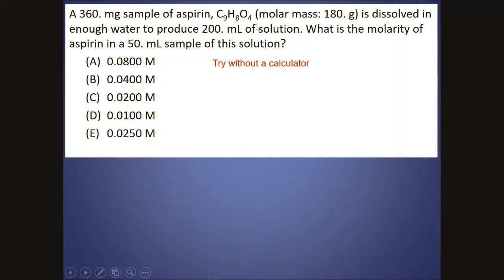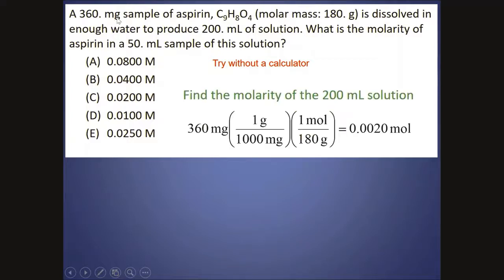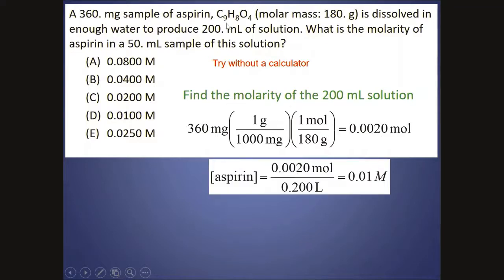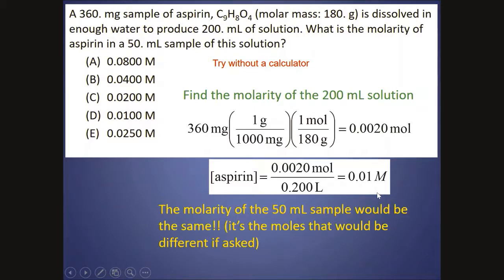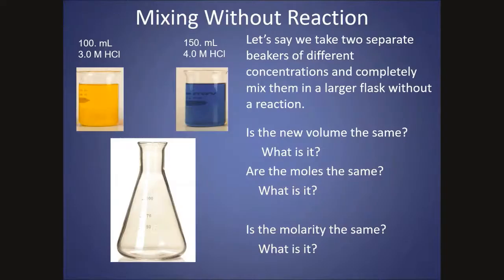So in this problem, 360 milligrams of aspirin is dissolved in enough water to produce 200 milliliters of solution. Then they want to know what's the molarity of aspirin in a 50 milliliter sample of this solution. Well, I have the grams of aspirin. I can mole it out, essentially, to get the moles of my solute, and then I can divide it by the volume that it's dissolved in, which is the 200 milliliters, and get the molarity. And if I were to take a 50 milliliter sample of that, the molarity would be the same. The moles would not be the same, but the molarity would be.